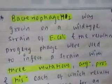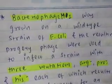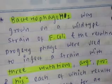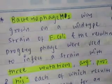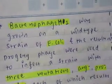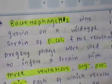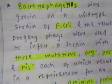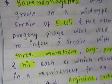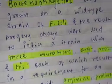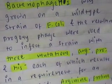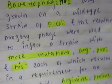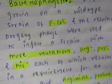In this video, we will try to solve the problem in exotropic strains of bacterial phage. There are bacterial phage M1 that was grown on wild type strain of E. coli, and the resulting progeny phage were used to infect a strain which has three mutations: arginine, proline, and histidine.